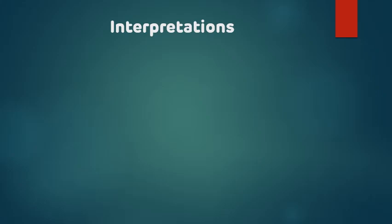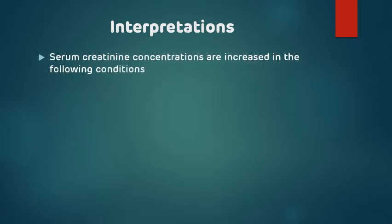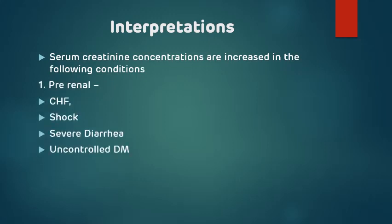Now for interpretations — what are the various conditions that lead to an increase in serum creatinine level? First, pre-renal conditions like congestive heart failure, shock, severe diarrhea, and uncontrolled diabetes mellitus. These are conditions which can lead to an increase in the serum creatinine value.